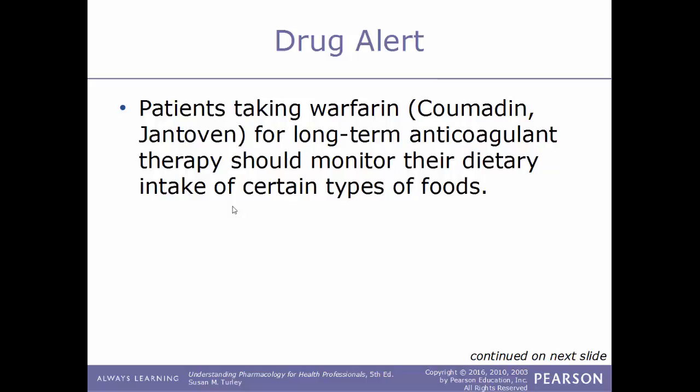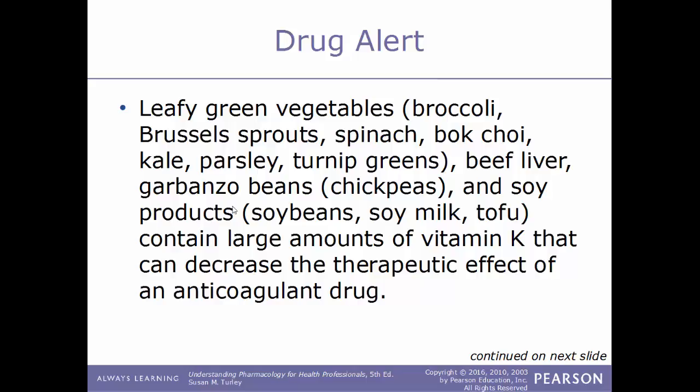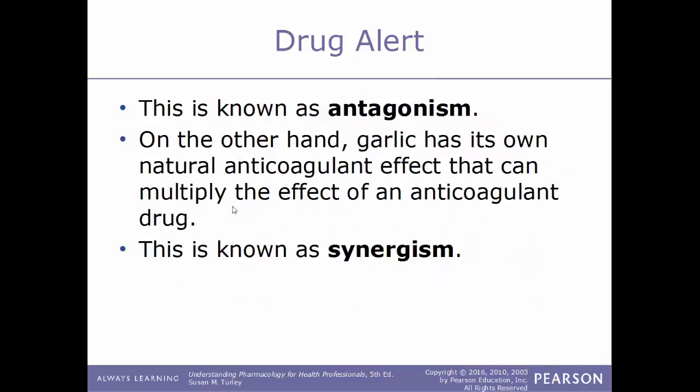Drug alert: patients taking warfarin for long-term anticoagulant therapy should monitor their dietary intake of certain foods. Leafy green vegetables like broccoli, Brussels sprouts, spinach, bok choy, kale, parsley, and turnip greens, as well as beef liver, chickpeas, and soy products, contain large amounts of vitamin K that can decrease the therapeutic effect of the anticoagulant drug. Since warfarin works by blocking vitamin K, a diet high in vitamin K will negate its therapeutic effect — this is called antagonism.